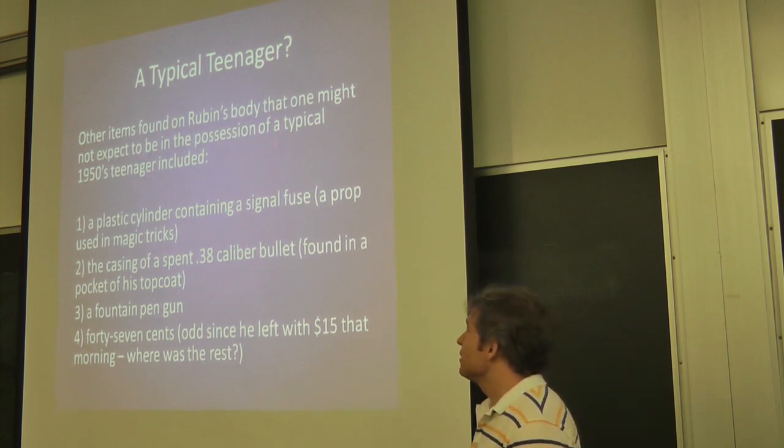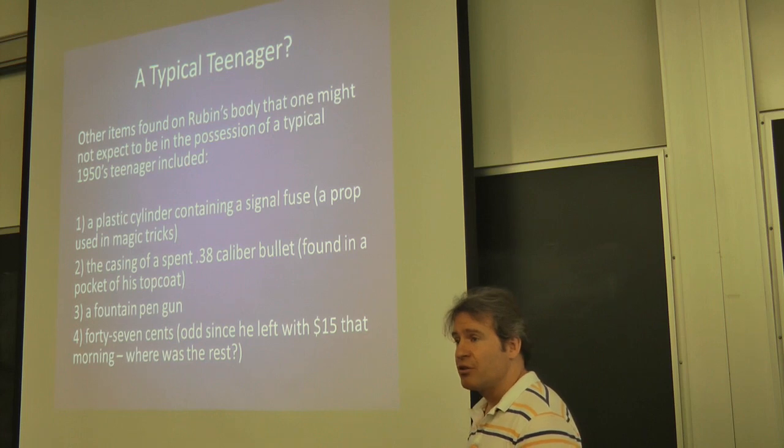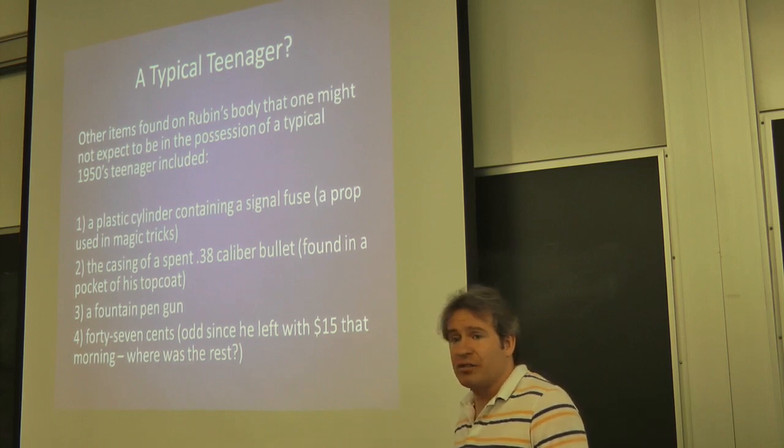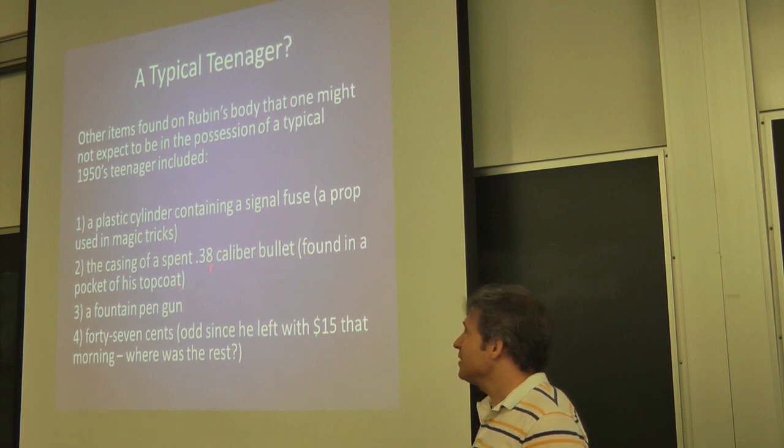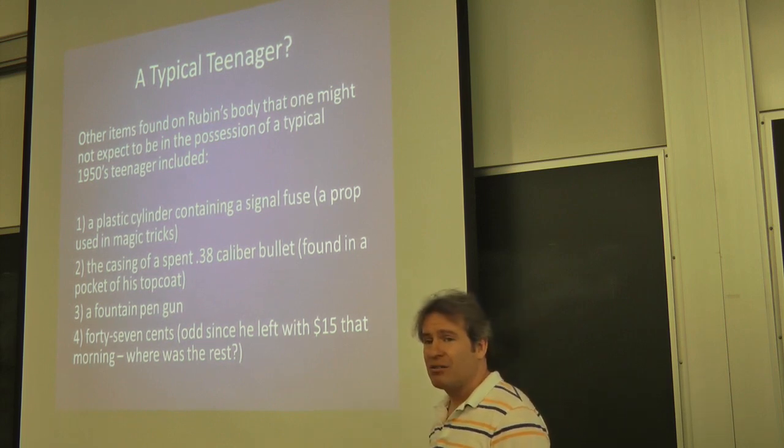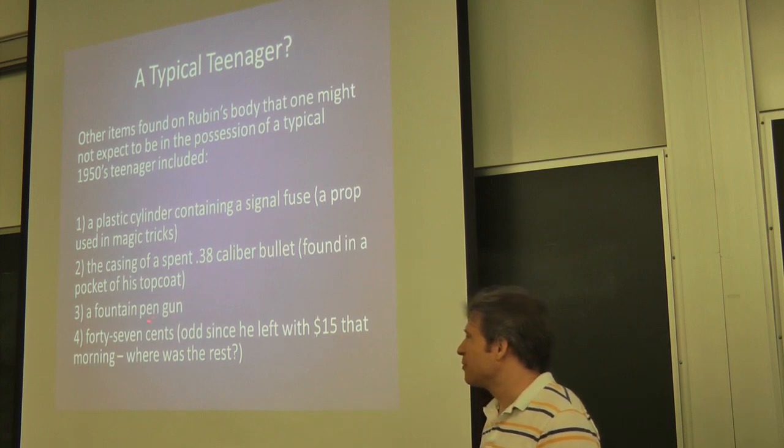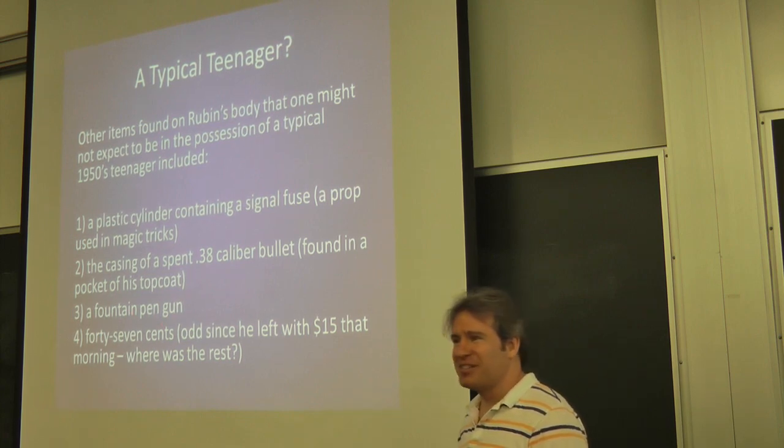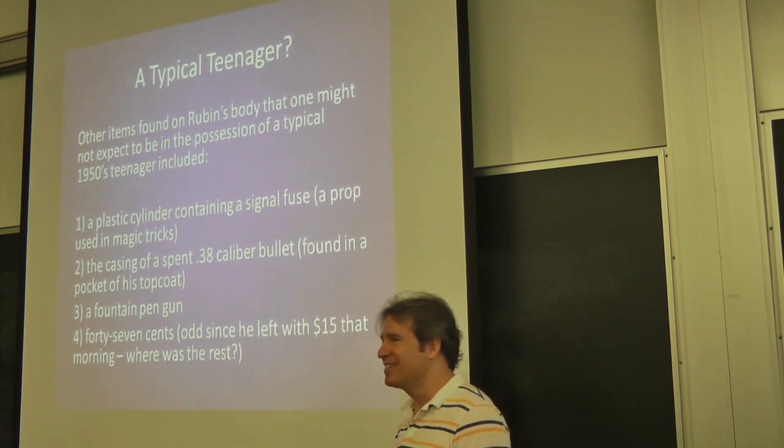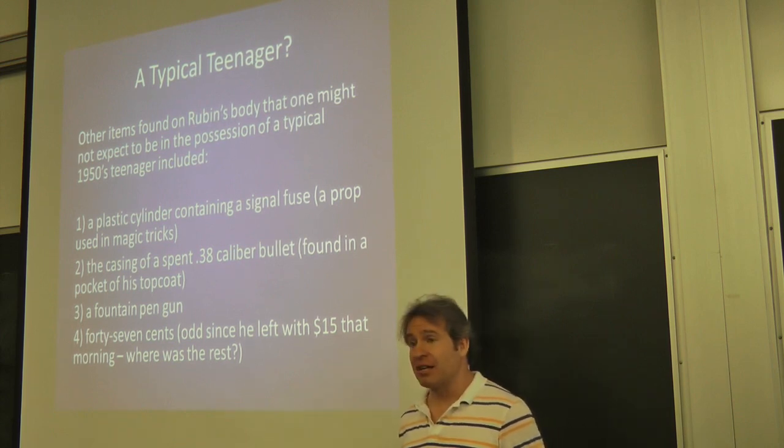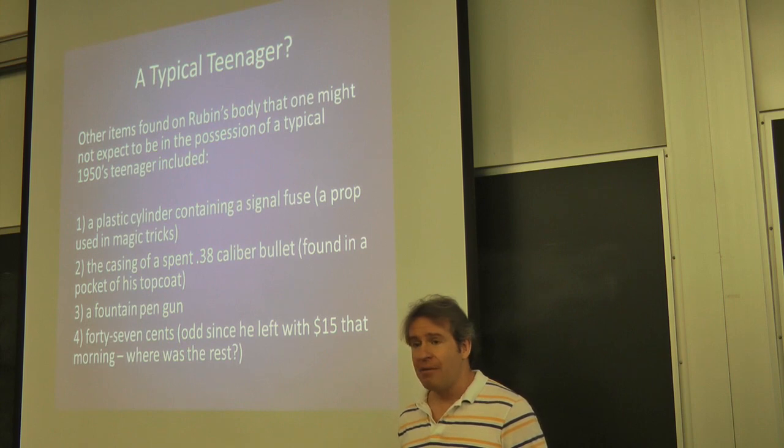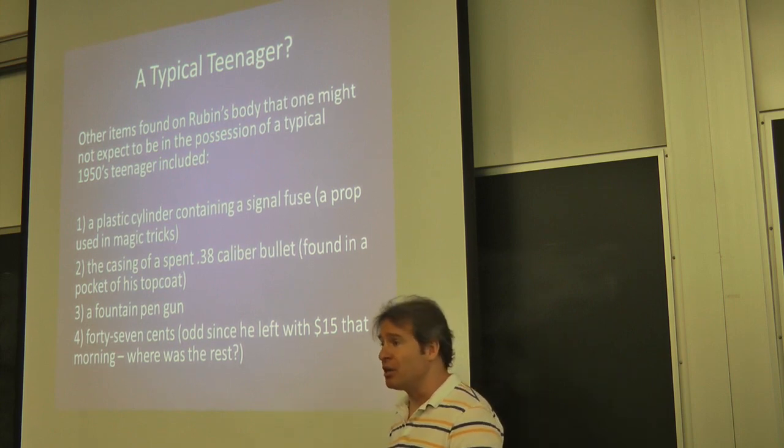He's got a plastic cylinder containing a signal fuse, which could just be a prop for magic tricks if he's into magic. We don't have to read anything too nefarious into that. The casing of a spent .38 caliber bullet. What's that? A fountain pen gun? I'm thinking, what is this? James Bond? He's got fountain pen guns? What's going on here? But talking to David Hatch, it's not necessarily like I might imagine.